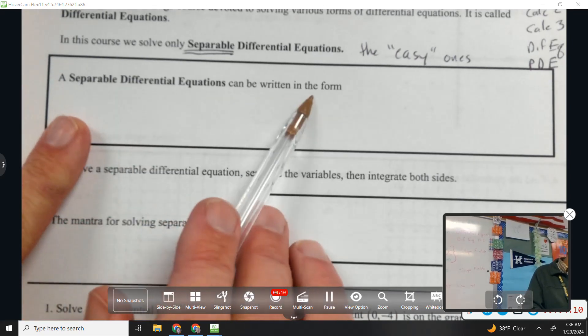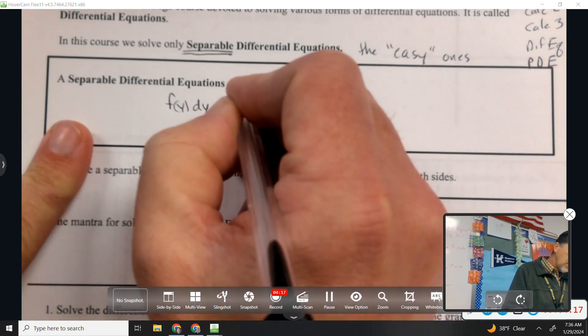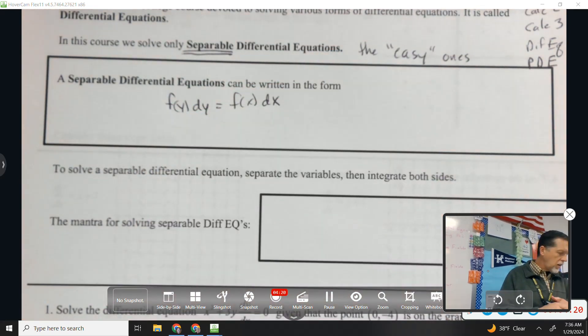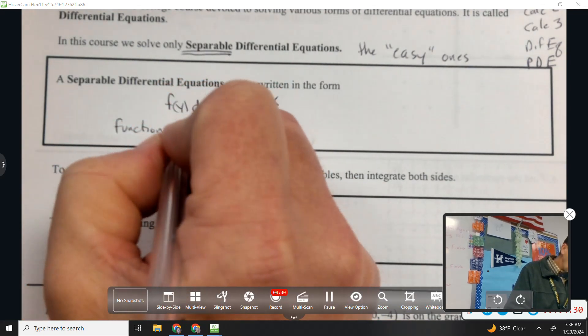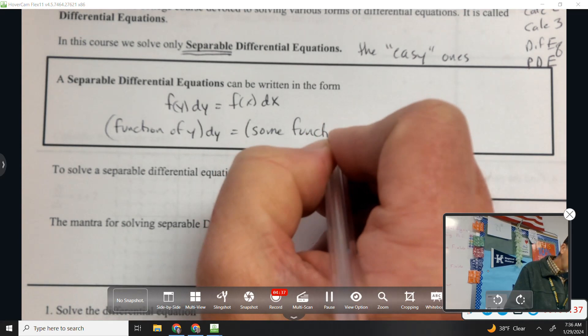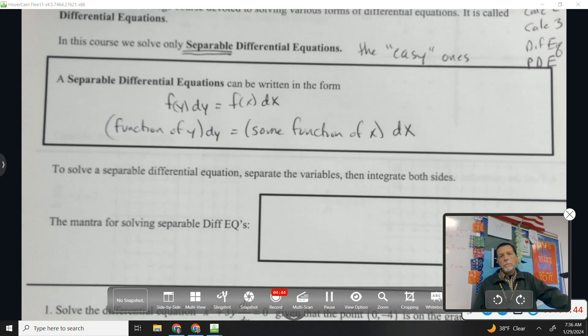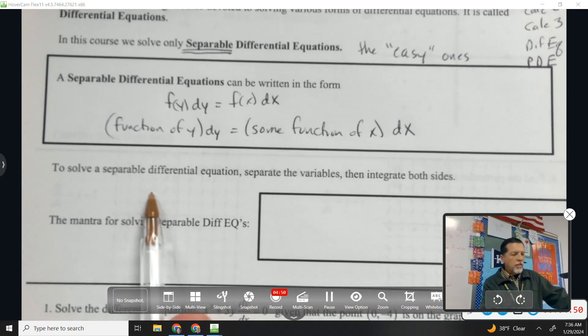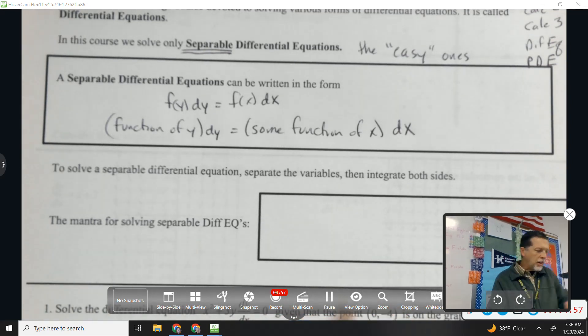A separable differential equation can be written in the form f(y) dy equals f(x) dx. So what that means is some function of y times dy equals some function of x dx. And then we integrate both sides and we're good to go from there.